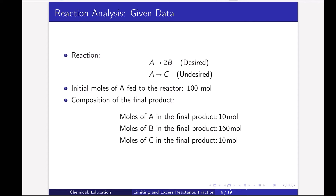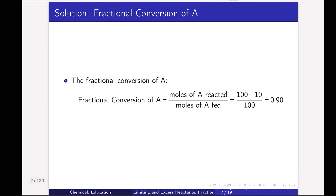Given data: A to 2B (desired), A to C (undesired). Initial moles of A fed is 100 moles. Composition of the final product: moles of A = 10, moles of B = 160, moles of C = 10. First, fractional conversion of A equals moles of A reacted divided by moles of A fed. Moles reacted = 100 minus 10 = 90. So fractional conversion of A = 90/100 = 0.90.